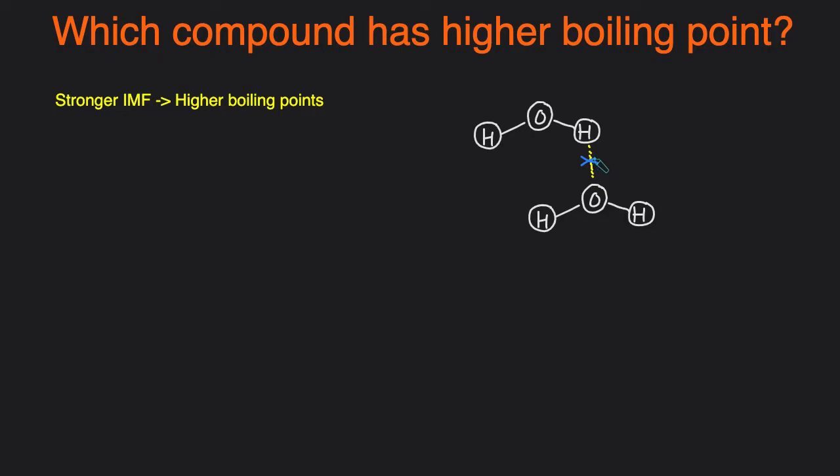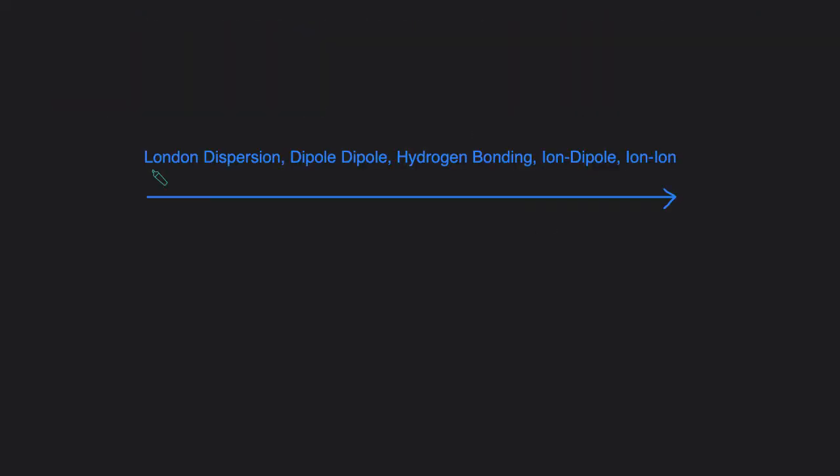Now let's talk about all the different types of intermolecular forces and how they compare in terms of their strength. The five main types of intermolecular forces that you'll see in most chemistry classes are these: London dispersion forces are the weakest, then dipole-dipole, then hydrogen bonding, then ion-dipole, and then ion-ion is the strongest. So LDFs are the weakest and ion-ion are the strongest.